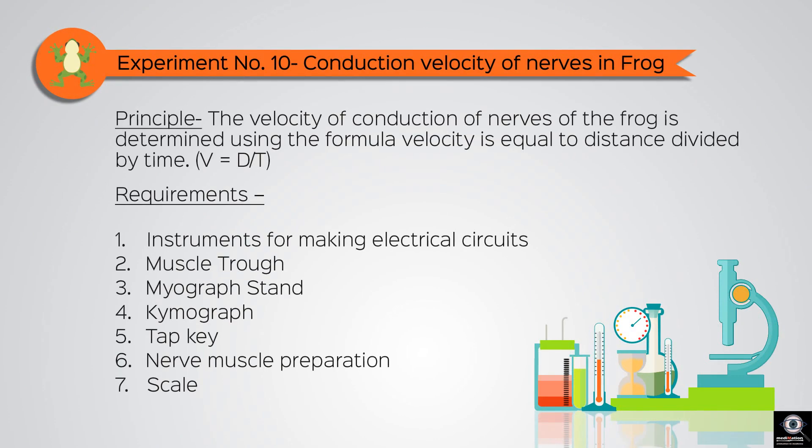In this experiment, we will calculate the conduction velocity of the nerves of the frog. The velocity of conduction of nerves in the frog is determined by using the formula velocity is equal to distance divided by time.